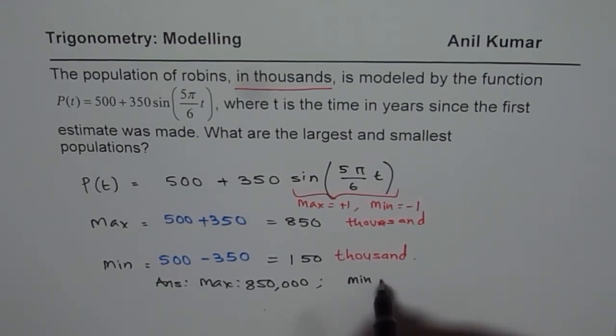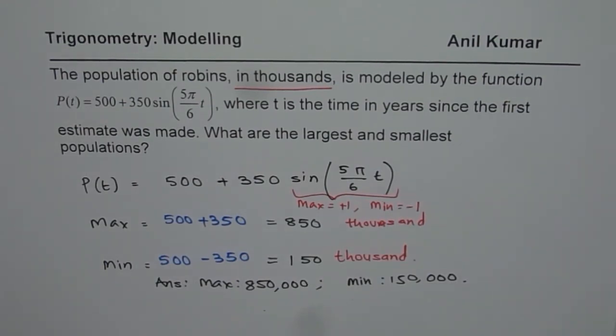The minimum number of birds will be 150,000. That is how you should answer this question.